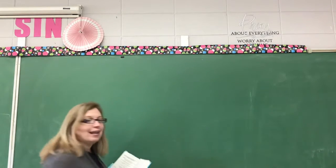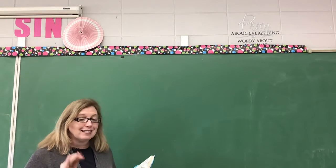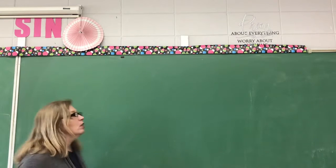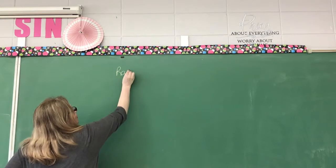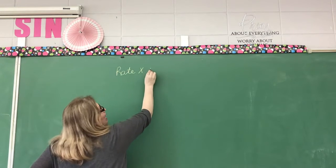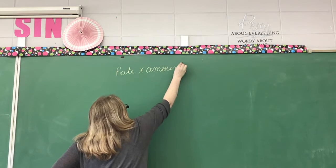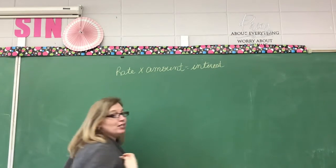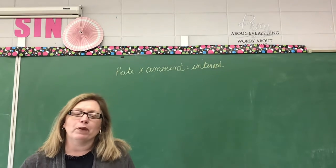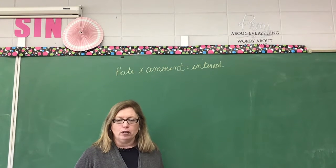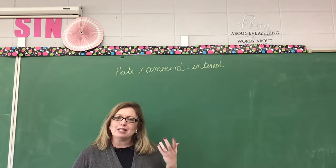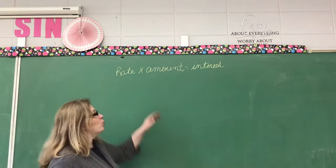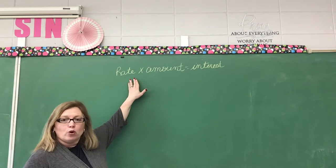We need to remember how we find interest. Interest is a simple formula. The word they use in your book is amount — they use the words rate times the amount equals the interest. Now, the word amount is really called the principal. The principal is the amount of money you're placing into the bank that they're going to pay you interest on. The rate is the percentage they are going to pay you.